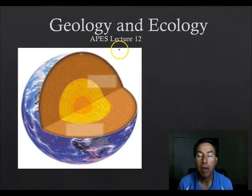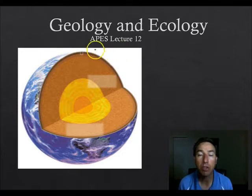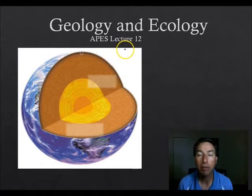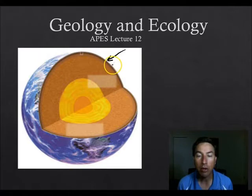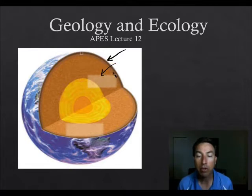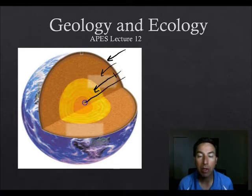One of the things about geology is you have to think about how the planet is constructed in order to understand how geology works. The planet has layers: the crust is on the outside, underneath the crust is the mantle, and next to the crust is a region called the asthenosphere. Then we have the outer core and then we have the inner core.